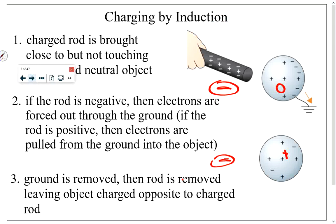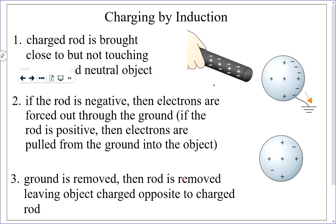When you charge by induction, what you're doing is pushing electrons out of an object or pulling electrons into the object to or from the ground. If you start with a neutral object and bring a negatively charged object close but not touching, you are inducing electrons to leave the object into the ground, as long as the object is grounded. You then have to remove the ground before you remove the charging object — by cutting the ground, you're essentially slamming the door on the electrons so they can't come back in. The end result is you use the negatively charged object to charge an object positive, without any contact.